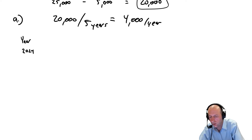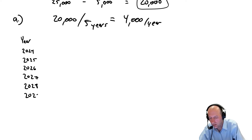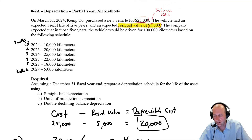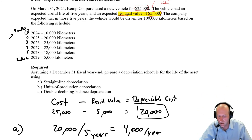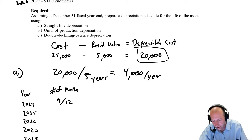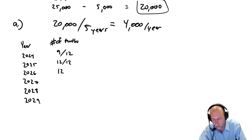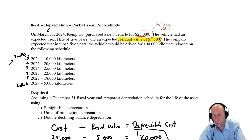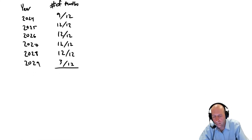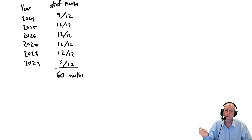We purchased on March 31st, 2024, so our schedule covers years 2024, 2025, 2026, 2027, 2028, and 2029. For months owned: in 2024 we own it for nine months — April through December, that's nine twelfths. Then 12 out of 12 months for 2025, 2026, 2027, and 2028. And in 2029, if we own it for exactly five years until March 31st, that's three months — three out of 12. Adding up all the months: 9 plus 12 plus 12 plus 12 plus 12 plus 3 equals 60 months total, which is five years.